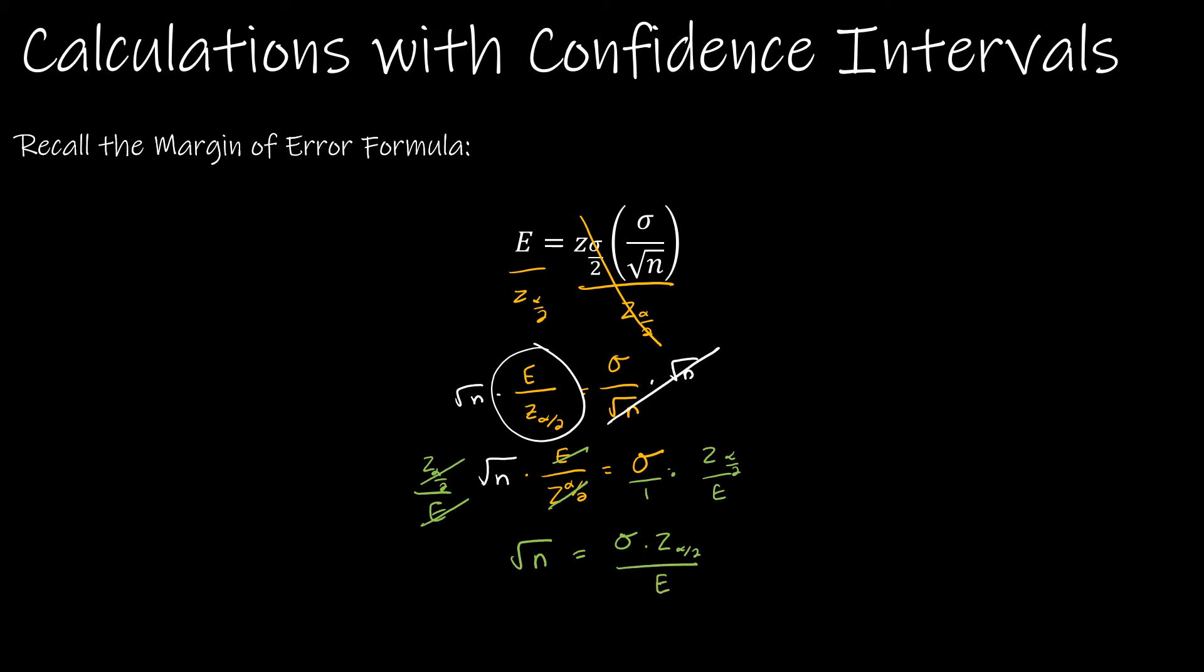And now I just want n. So I'm going to square each side. So my solution is that n is sigma times critical value divided by E quantity squared. So this is how we're going to find n if we are given sigma or critical value and the margin of error.